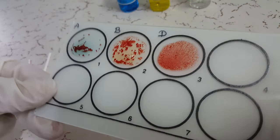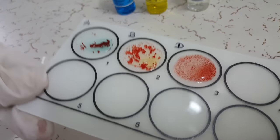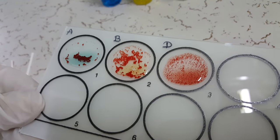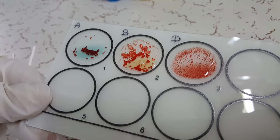As seen in this video, a clear cut agglutination can be seen on all the three circles. Hence it can be concluded that this patient is AB positive blood group.